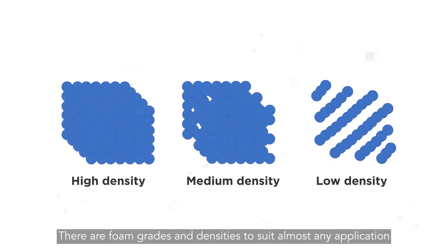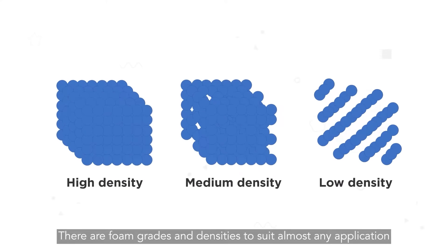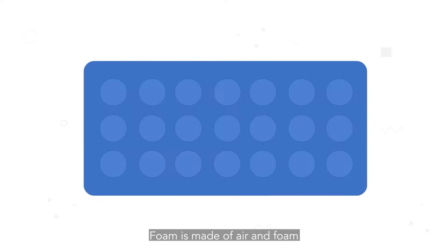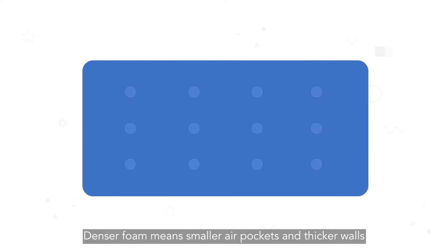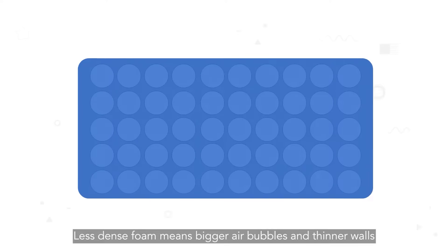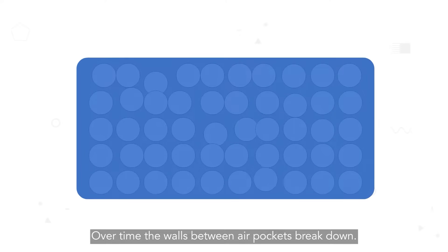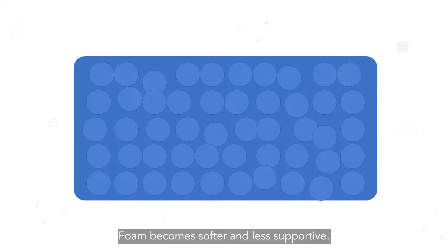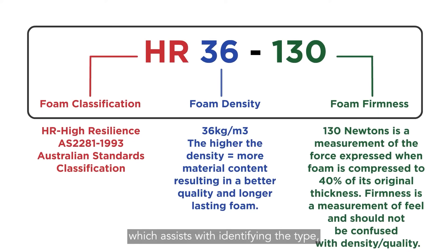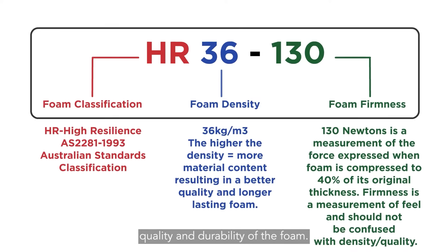There are foam grades and densities to suit almost any application. Foam is made up of air and foam material. Denser foam means smaller air pockets and thicker walls, while less dense foam means bigger air bubbles and thinner walls. Over time, the walls between air pockets break down and foam becomes softer and less supportive. Usually foam grades are referred to as a code which assists with identifying the type, quality and durability of the foam.